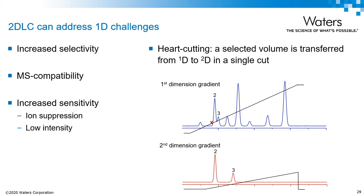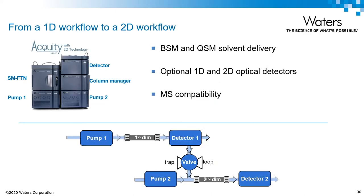Today we're going to focus on heart cut mode, which works to transfer discrete fractions to the second dimension for analysis. Peaks 2 and 3 are partially co-eluted in the first dimension, and by transferring them to the second dimension, we can tailor the second dimension gradient to further resolve them. This is in contrast to comprehensive 2DLC, which sends fractions of the entire 1D chromatogram to the second dimension. Although you can purchase a new system dedicated specifically to 2D, you can also transition your existing 1D workflow with a few module considerations. A secondary pump is incorporated for the second dimension separation, and the column manager must be equipped with valve switching functionality.